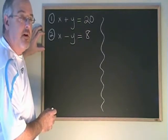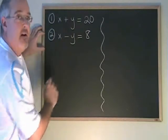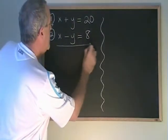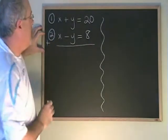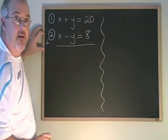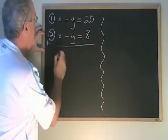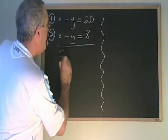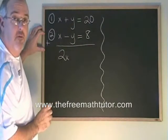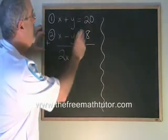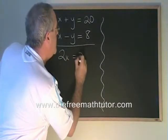The thing that makes elimination work is the fact that we can add equations. It seems like a strange thing to do, but we can add these two equations together. We add the x's, we add the y's, and we add the numbers. x plus x is 2x, y plus negative y cancels. There's no y in the answer, and 20 plus 8 is 28.